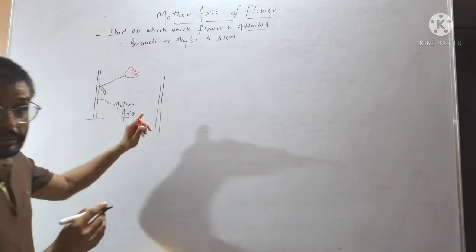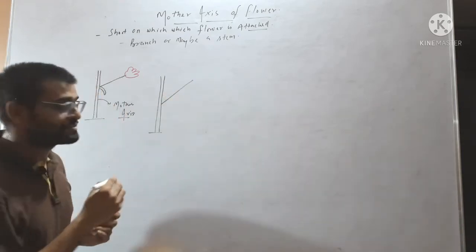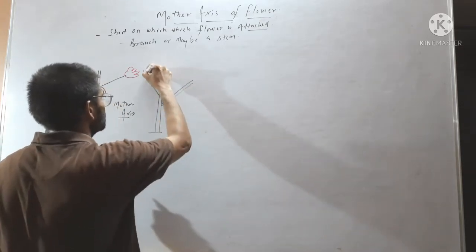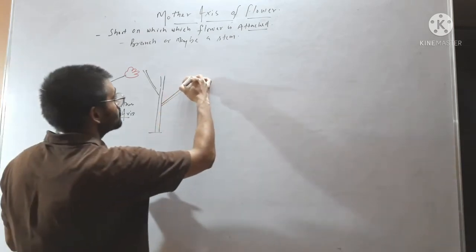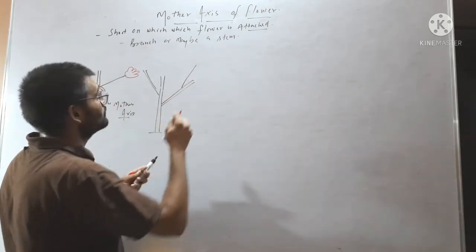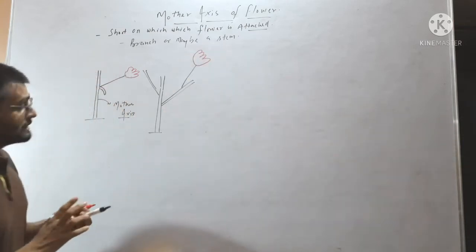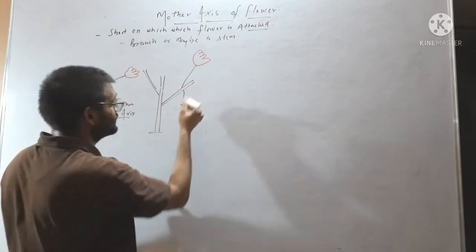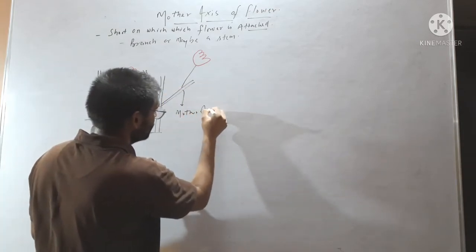The main stem has branches. These branches may also bear a flower. If this branch bears a flower, then this branch will be called the mother axis.